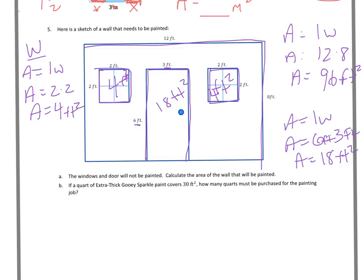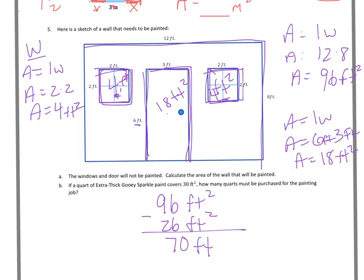So now I can take my 96 feet squared and I'll subtract off 4, 4, and 18. And if I add those up I know 4 and 4 is 8. 18 plus 8 is 26. And I'm subtracting that because I don't want to paint the door in the windows. So I'm left with 70 feet squared. So that's how much area needs to be painted.